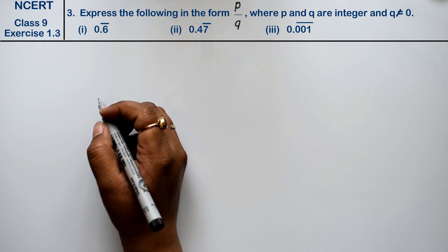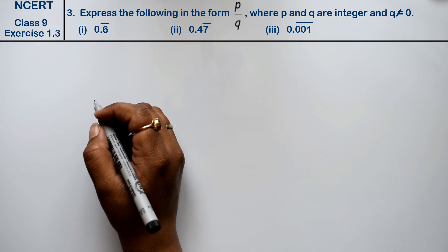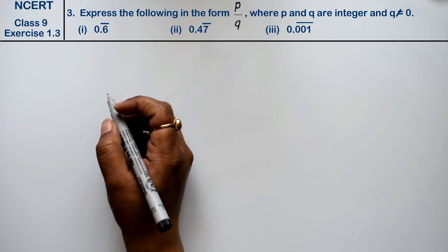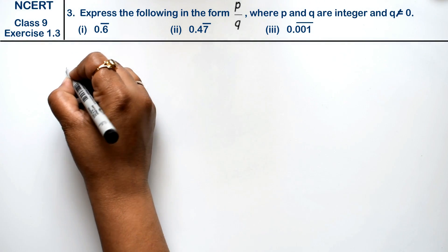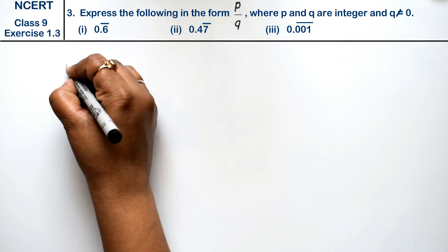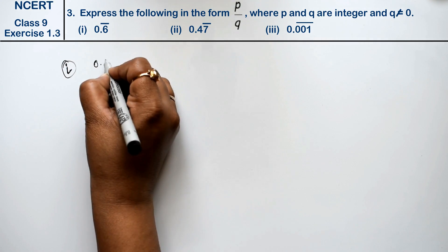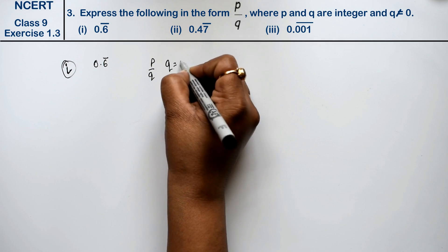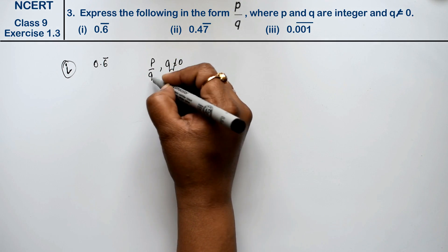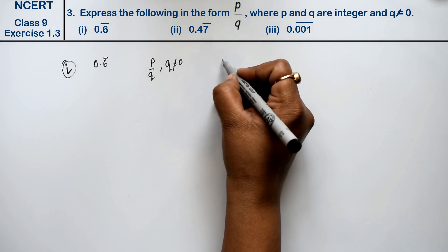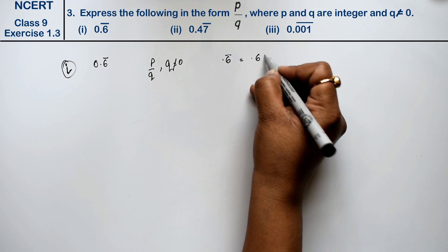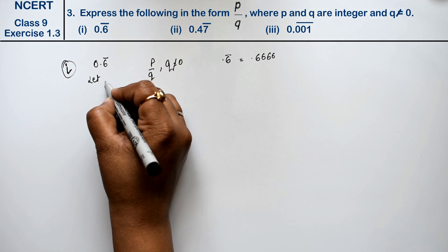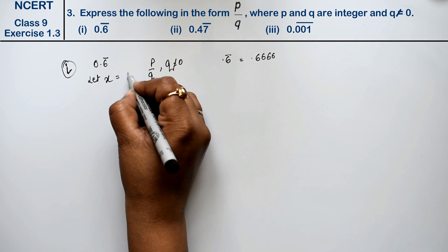Let's do question number 3 of Exercise 1.3, that is Number System. Question 3: express the following in the form p/q where p and q are integers and q is not equal to 0. The first part is 0.6̄. We have to express this in p/q form where q is not equal to 0. The value below the bar is 0.6̄, meaning 0.6666... So let x equal to 0.6̄. This is our equation first.